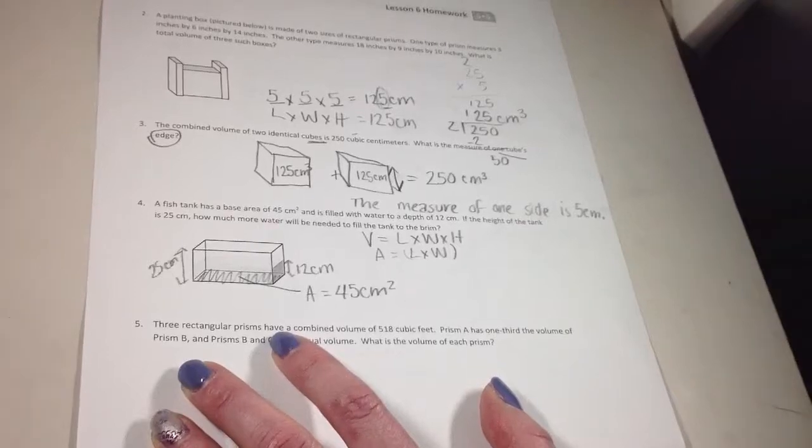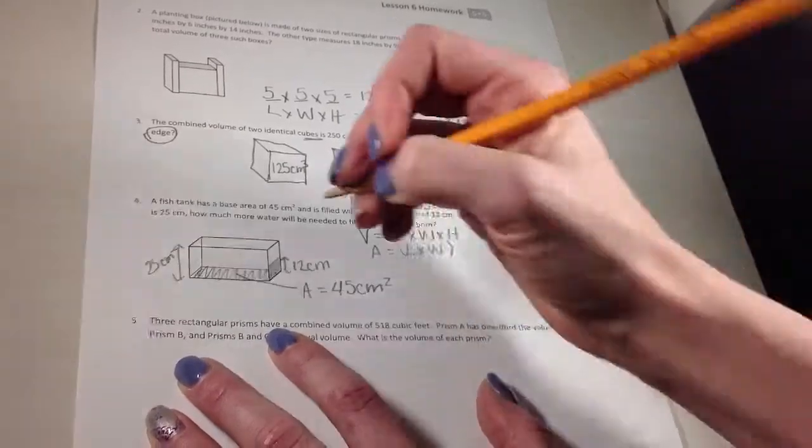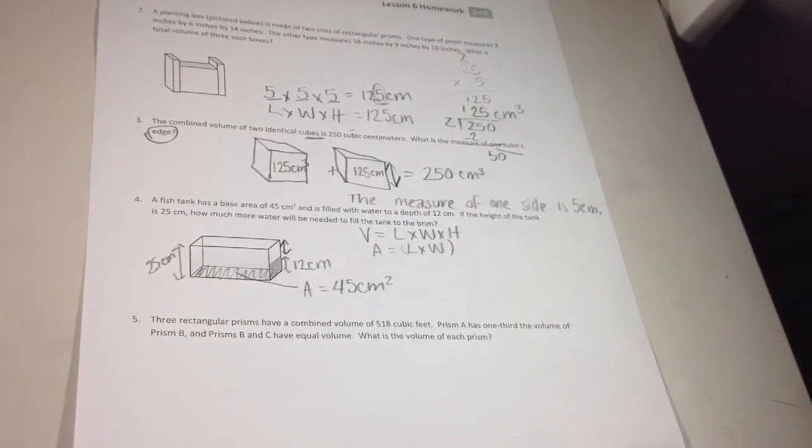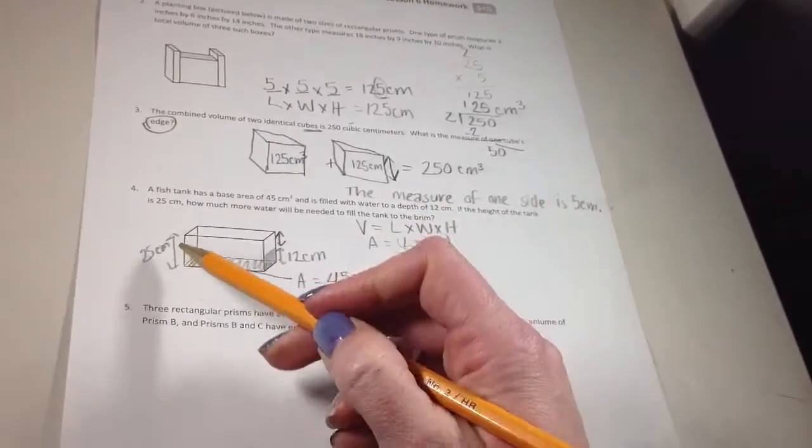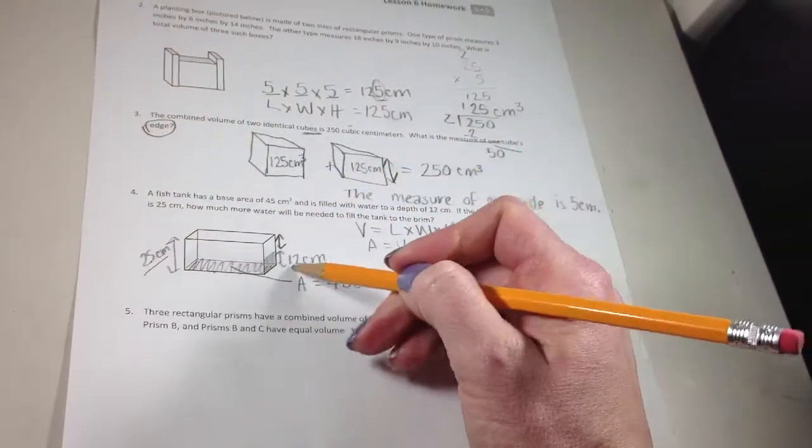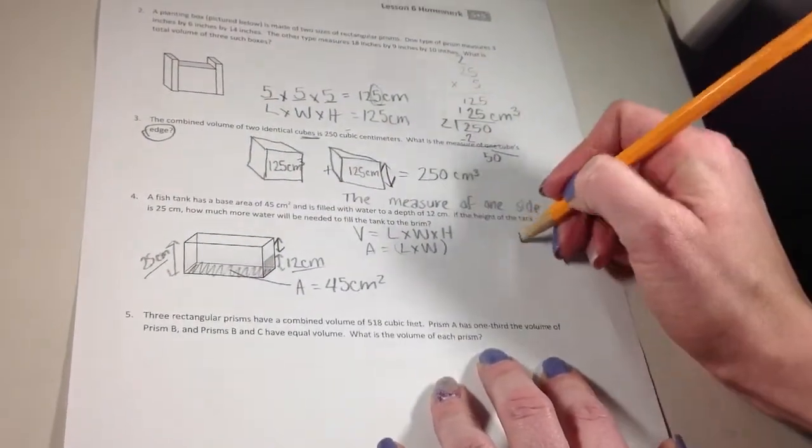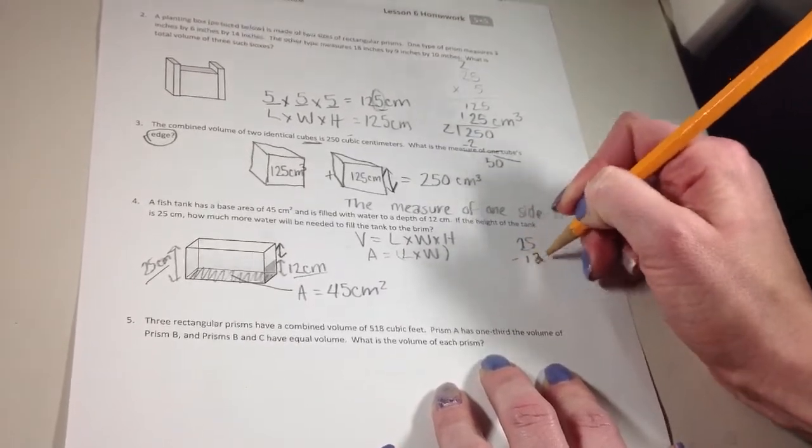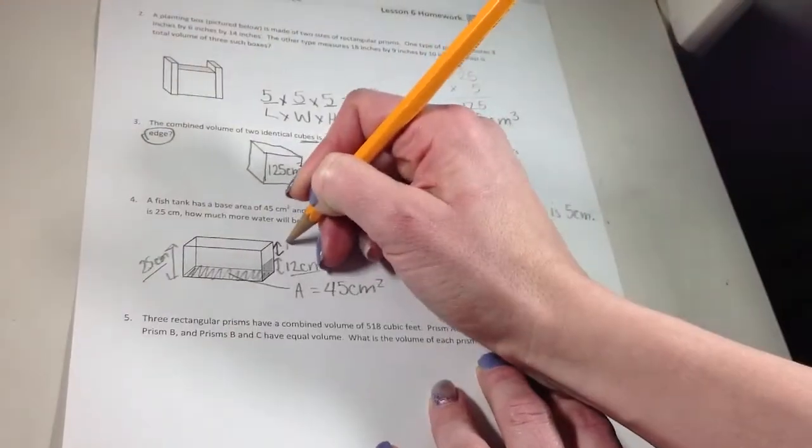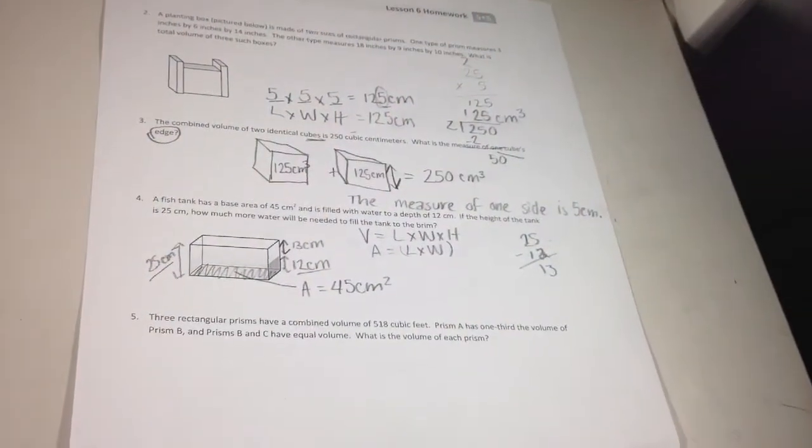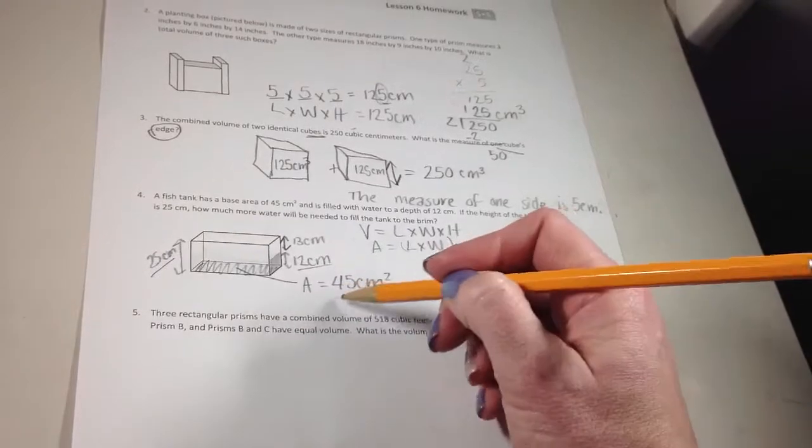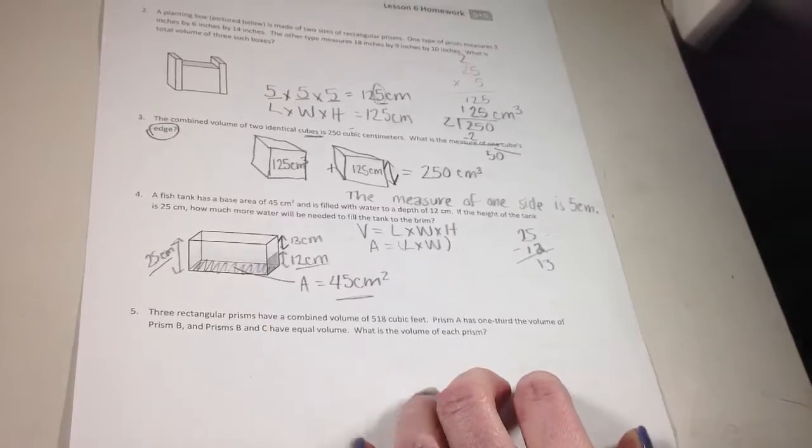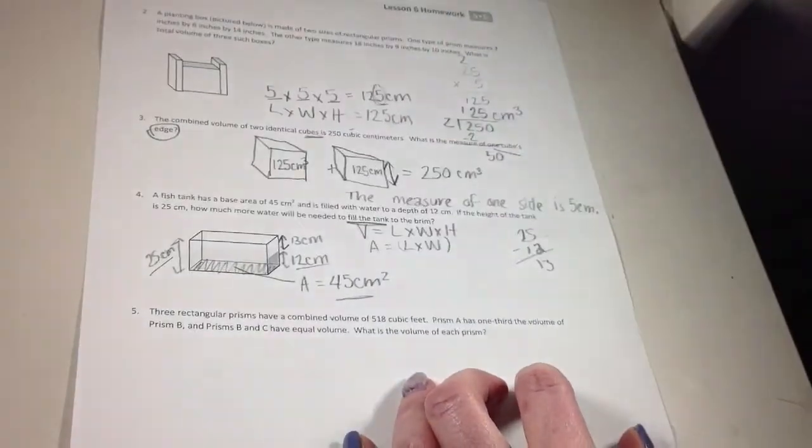I want to know how much more water I need to put in it to fill the tank up. So this empty space, I need to know how much empty space is there. Well, I know I have 25 over here, and I have 12 over here, so I can subtract them to find that missing section. So 25 minus 12 is going to give me 13. So I know this empty space is 13. And I already have the length and the width section done. So what I want to do is figure out the empty space area, because we're adding water to fill the tank to the empty space.